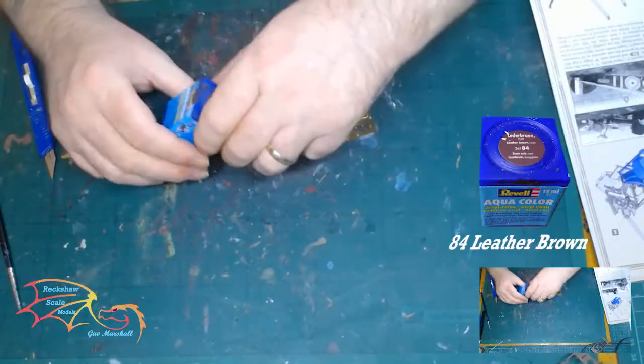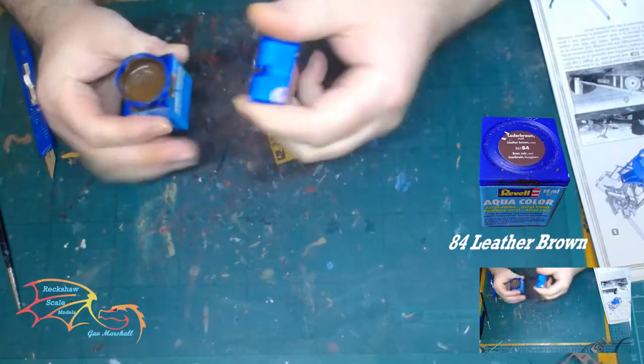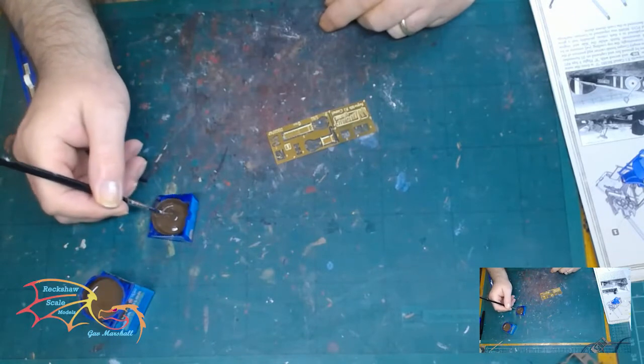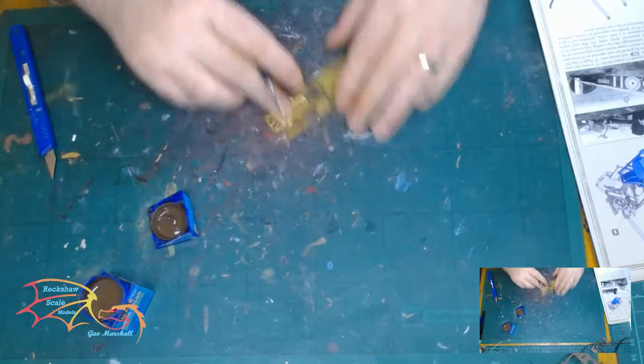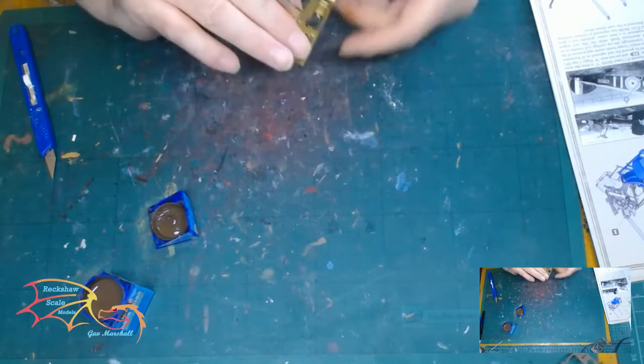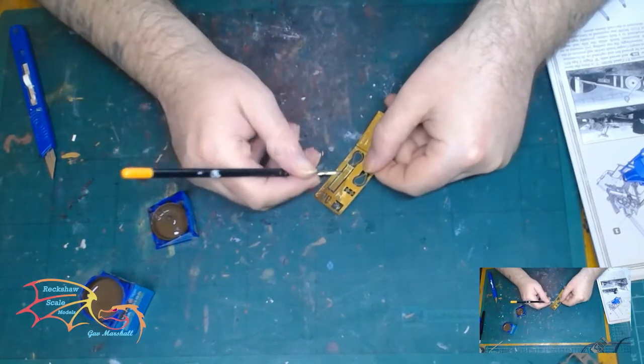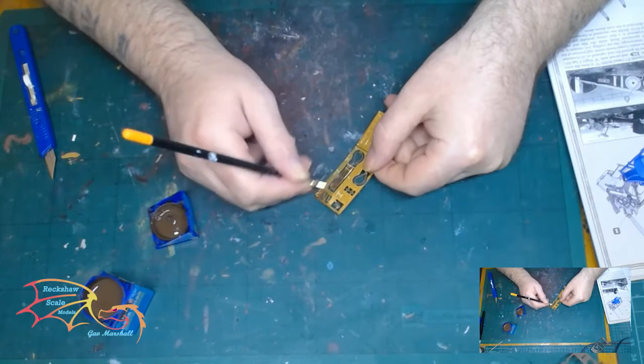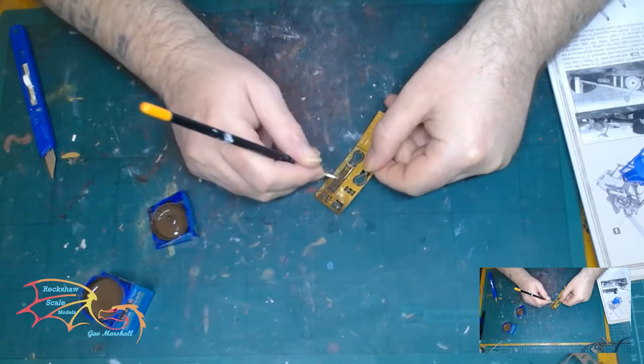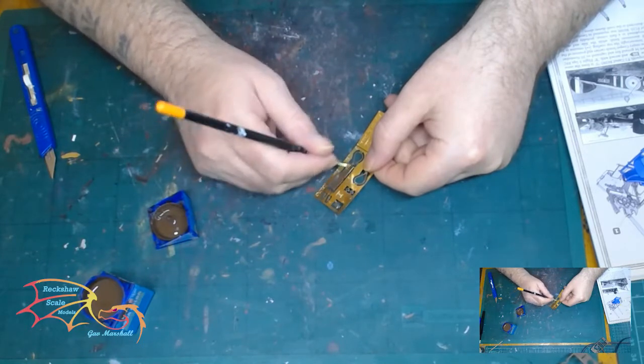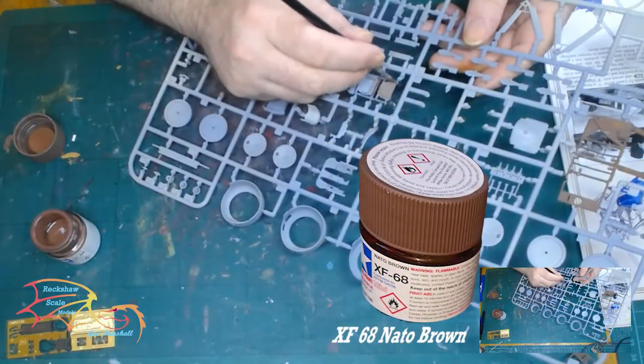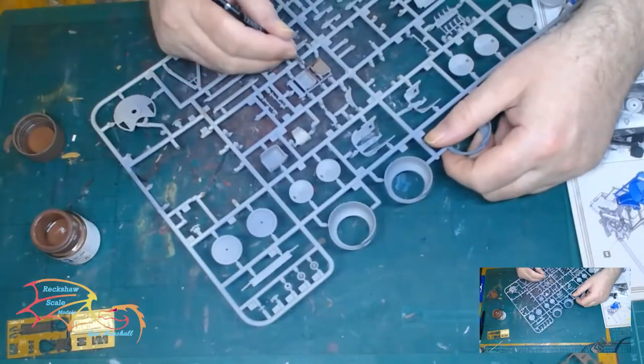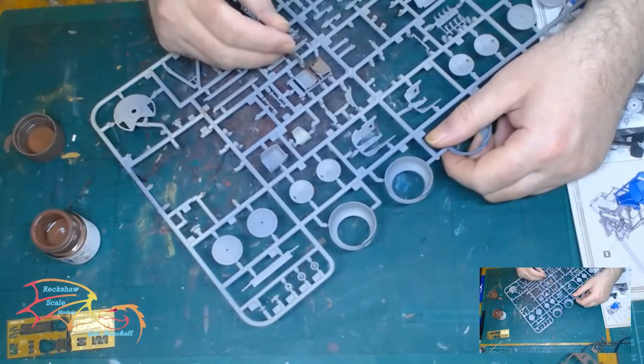Moving on to Revell Aquacolor 84 Leather Brown, I'm painting the fold edge part here and these are the seat belts. Now these seat belts are massively wide. I didn't know they were this wide on aircraft. It seems a bit strange to me, but there you go. Moving on to XF-68 Natal Brown by Tamiya, this is for the framework at the bottom of the cockpit.